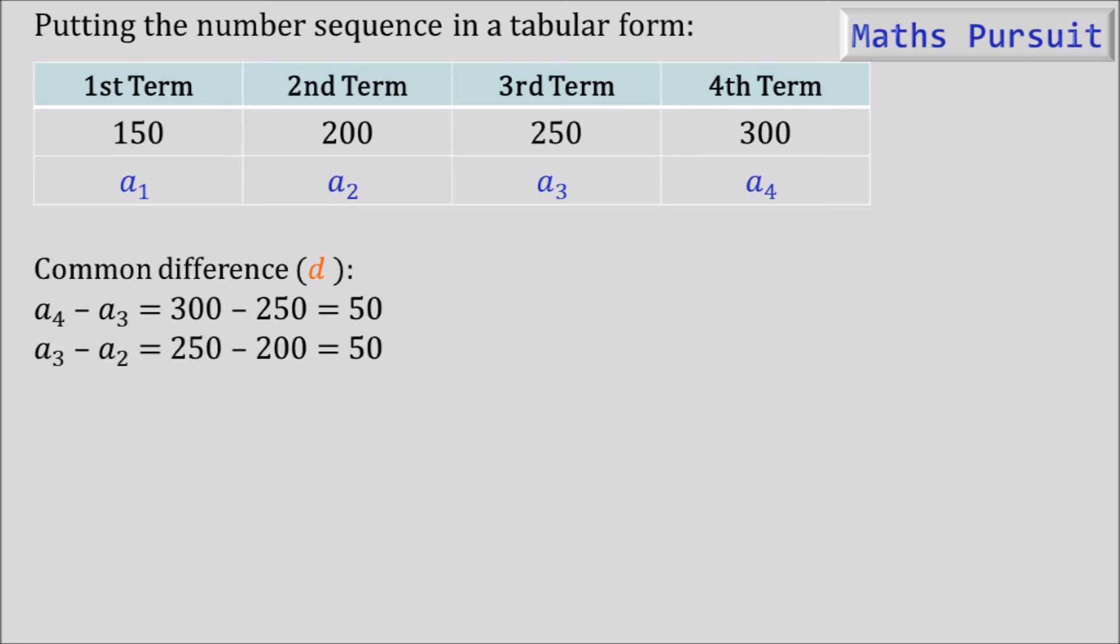Moving to the next: a₃ minus a₂, 3rd term minus 2nd term, equals 250 minus 200, that is equal to 50. 2nd term minus 1st term, a₂ minus a₁, equals 200 minus 150, which equals 50.